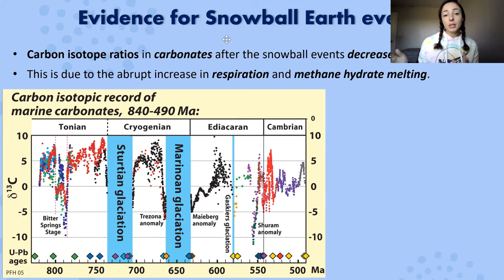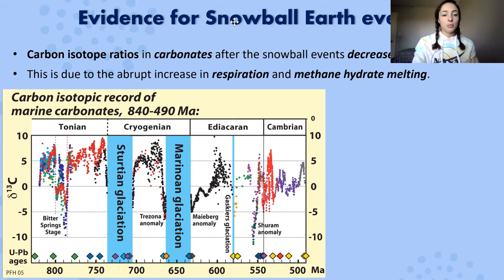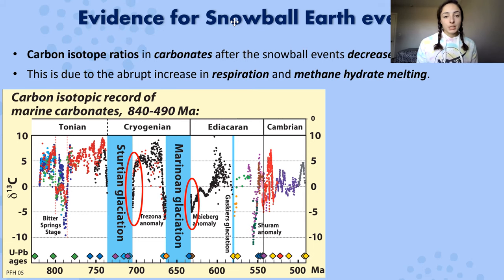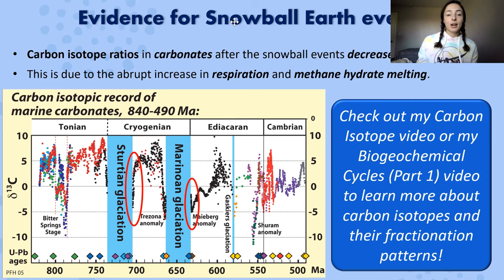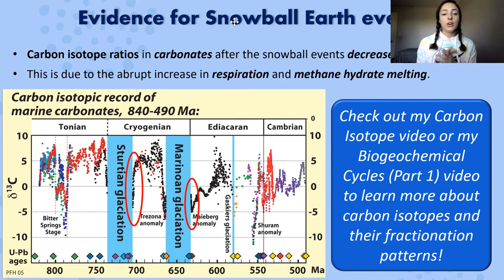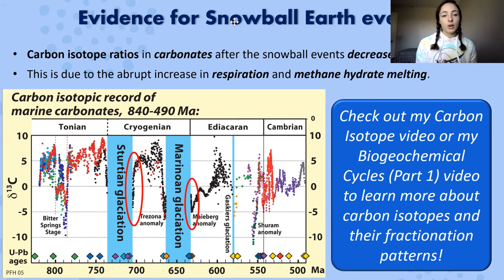For geochemical evidence, the main isotope system is carbon isotopes. Carbon isotope ratios in cap carbonates deposited following the glaciation events decreased dramatically. This drop is seen right after both the Sturtian and Marinoan glaciations and is due to an abrupt increase in respiration and methane hydrate melting. Photosynthetic and methanogenic processes cause uptake of lighter carbon isotopes, so when these are released through respiration, oxidation of organic carbon, and methane hydrate melting, all this light carbon being released into the atmosphere causes huge drops in carbon isotope composition.